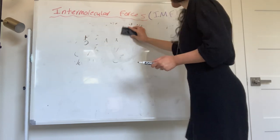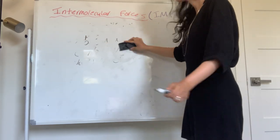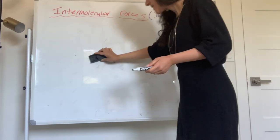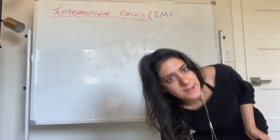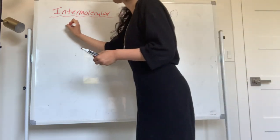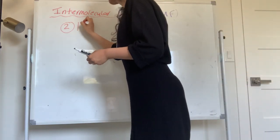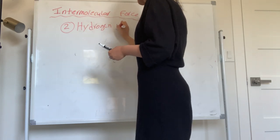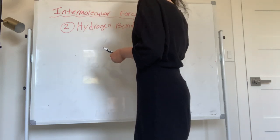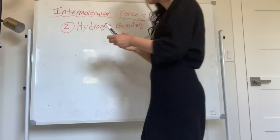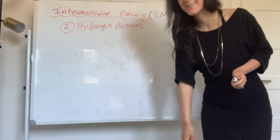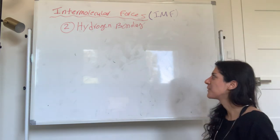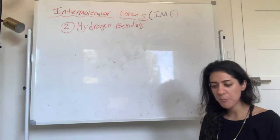The second type on your list is hydrogen bonding — cool chemists also call it H-bonding. Hydrogen bonding is responsible for a lot of things in our life. What makes you unique? What makes you you? It's your DNA. We all have different DNA.